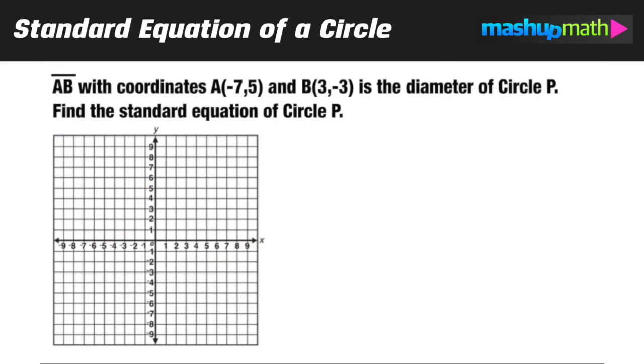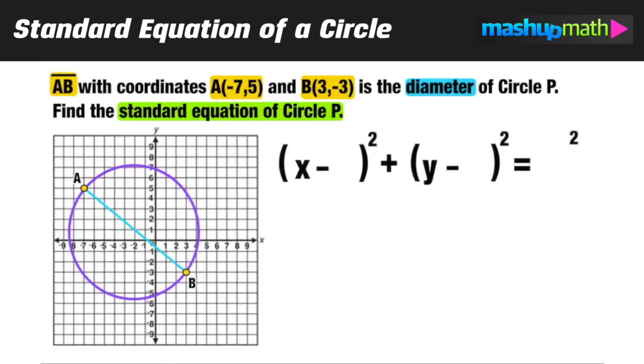For our next example we're told that line segment AB is the diameter of circle P and we want to find circle P's standard equation. Let's visualize what this circle looks like by plotting points A and B, A at (-7,5) and B at (3,-3) and constructing line segment AB. Since AB is a diameter those are endpoints that are on the circle, and we're going to need to know the center of that circle and the length of its radius. We don't know the location of the center, but we do know that the center will be directly in the middle of the diameter such that it cuts it into two congruent halves.